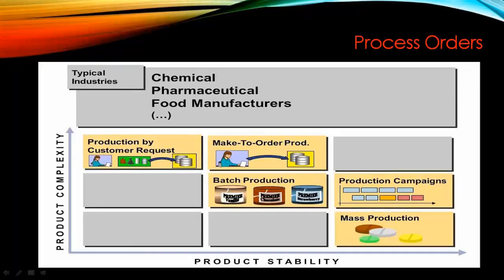Process Order is basically used in these types of industries — for example, Chemical Industry, Pharmaceutical Industry, and Food Manufacturing Industry. These are the most common types of industries that will be using the Process Order instead of the Production Order.